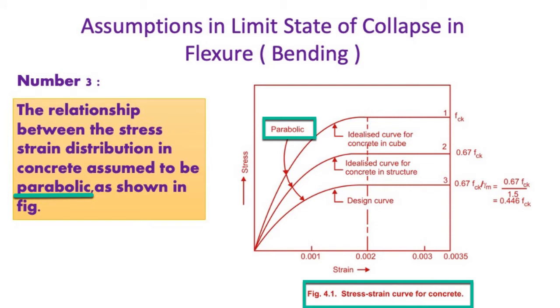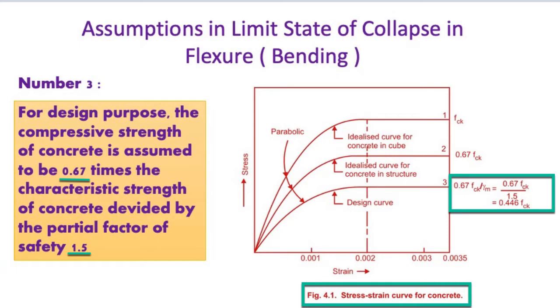Number 3 assumption: The relationship between the stress-strain distribution in concrete is assumed to be parabolic, as shown in figure. For design purposes, the compressive strength of concrete is assumed to be 0.67 times the characteristic strength of concrete divided by the partial factor of safety 1.5.